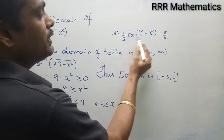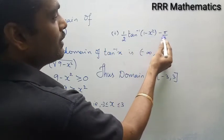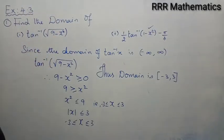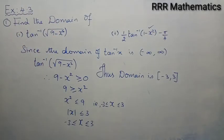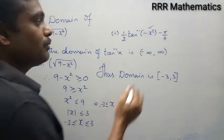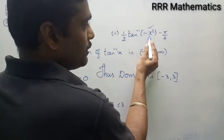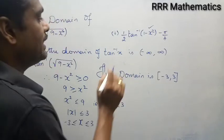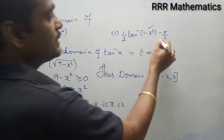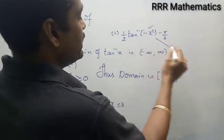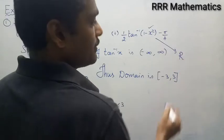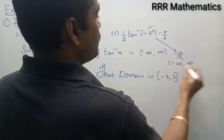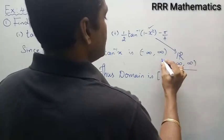In this case, for part 2, we have one half times tan inverse of 1 minus x squared minus 5 by 4. There is no restriction on 1 minus x squared — if x is between minus 1 and plus 1 it will be positive or zero, otherwise it will be negative, but that is no problem for tan inverse x. So the domain of tan inverse x is all of ℝ, that is minus infinity to plus infinity. Is it clear?